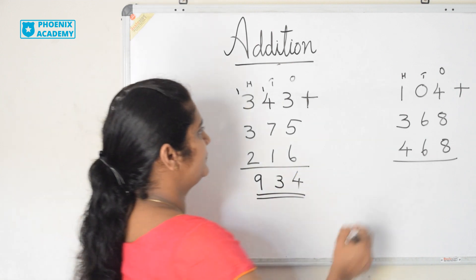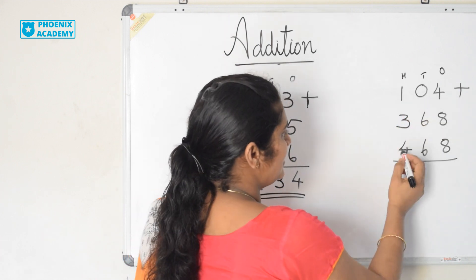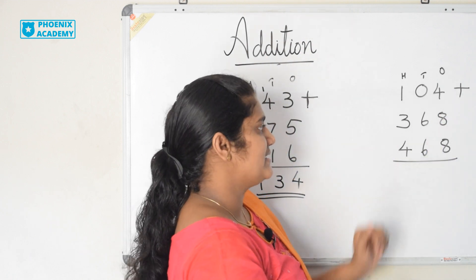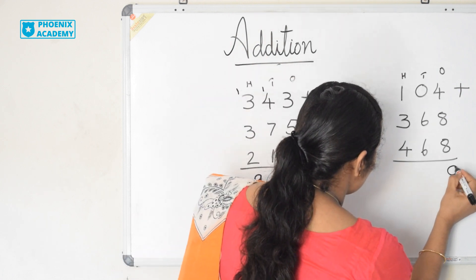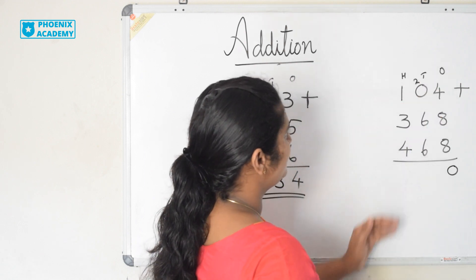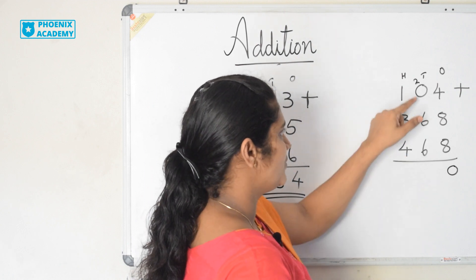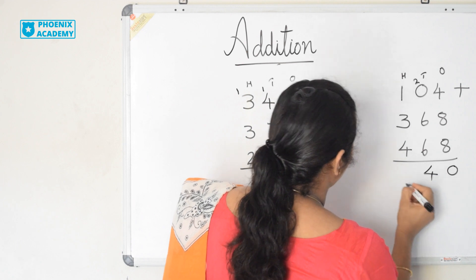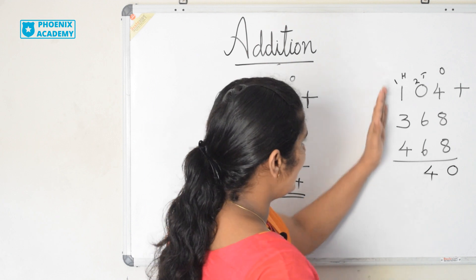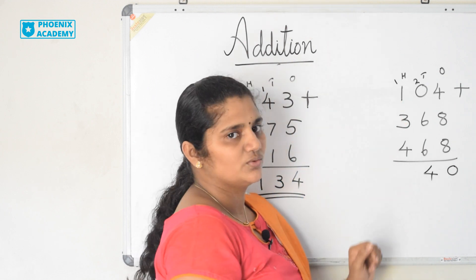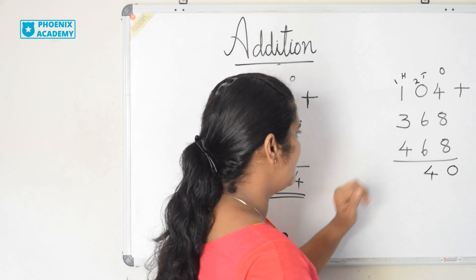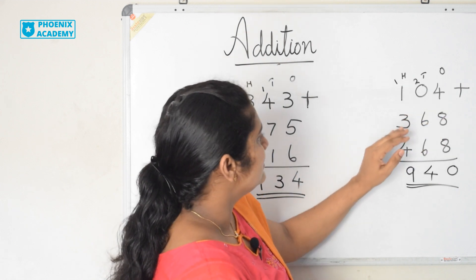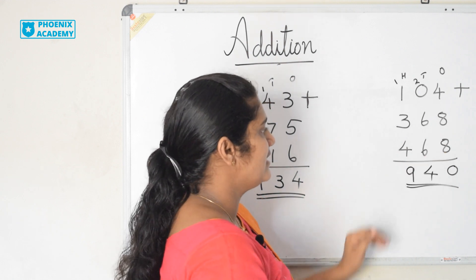Let's solve this example too. 104 plus 368 plus 468. Let's add from the 1's. 4 plus 8 is 12. 12 plus 8 is 20. I write 0 here and 2 in the 10's place. Let's add the 10's now. 2 plus 0 is 2. 2 plus 6 is 8. 8 plus 6 is 14. I write 4 here. 1 carry forwarded to the 100's place. Let's add the 100's. 1 plus 1 is 2. 2 plus 3 is 5. 5 plus 4 is 9. So the sum of 104 and 368 and 468 is 940.